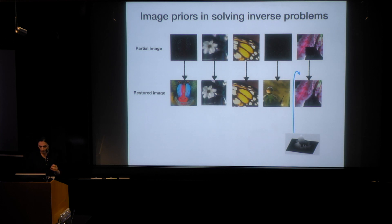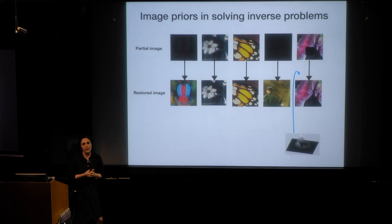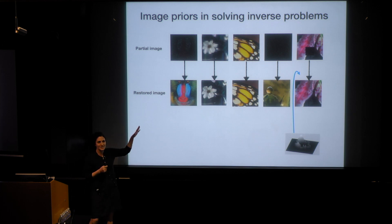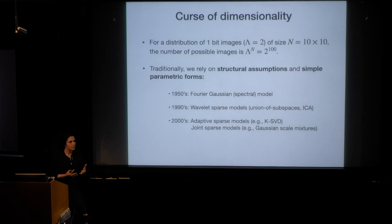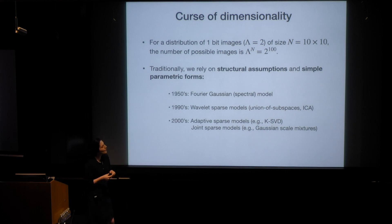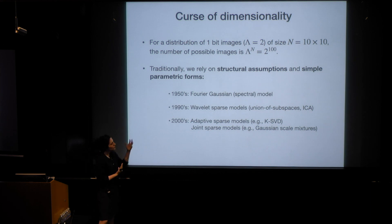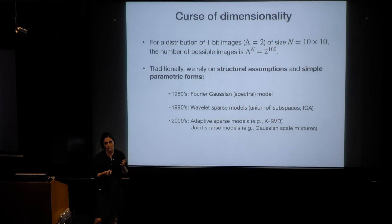These are ill-posed problems. One approach to solving them is a statistical approach — if we have access to a probability distribution, we can retrieve high-probability images which are consistent with the partial measurement. The problem is that it's not easy to construct such a probability distribution in high dimensions, and images are high-dimensional entities. For example, if you have a one-bit, 10 by 10 image patch, you would need to fill a histogram with 2 to the power of 100 bins — it's impossible to do density estimation in a brute force way. This is called the curse of dimensionality.